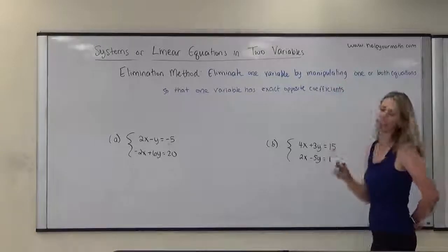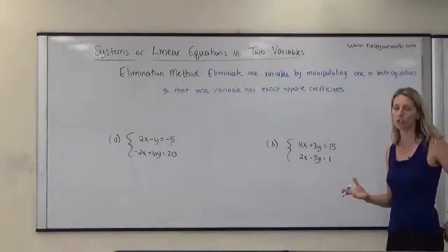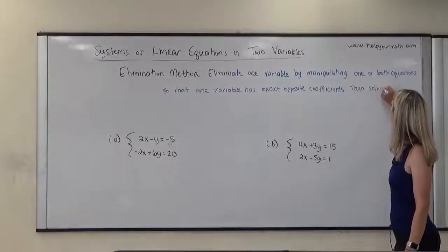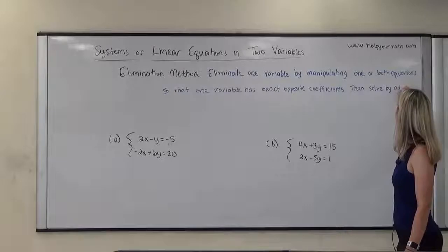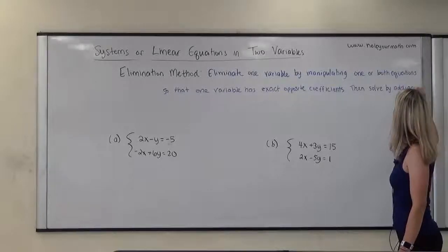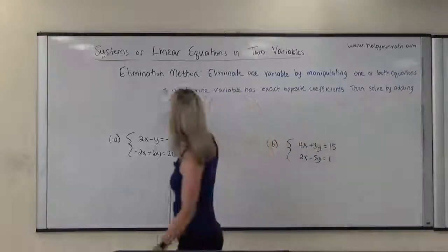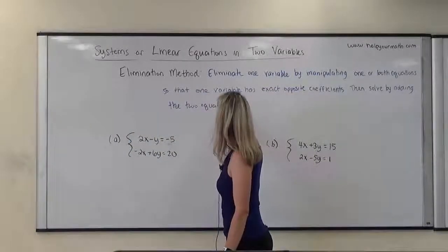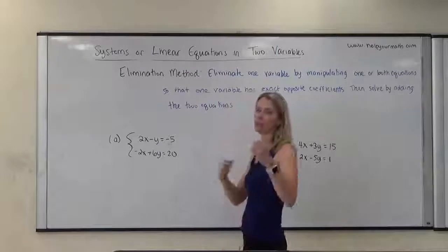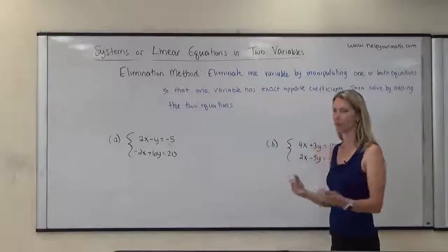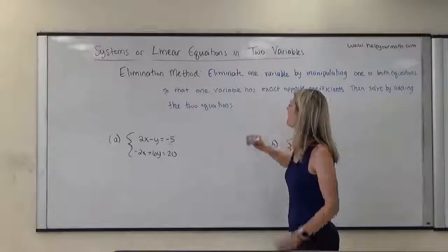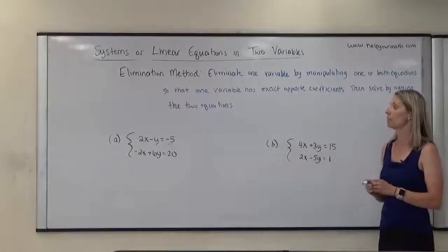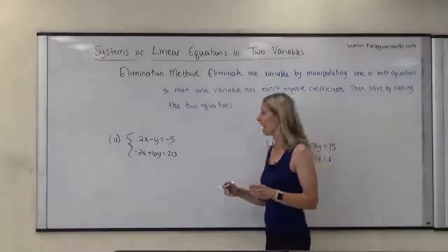Once they have the exact opposite coefficients, we will then solve by adding the two equations. That will eliminate one of the variables, and then you'll be given the solution, or you might have to divide both sides to determine the solution. That will tell you one variable, then you would have to go back to the original and plug in to find the other variable.